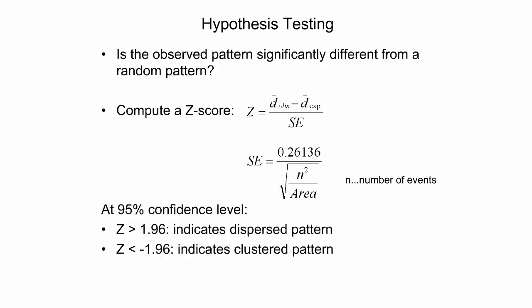A z-score is normally distributed with mean 0 and a standard deviation of 1. Therefore, at a confidence level of 95%, the obtained z-score value would have to be greater than 1.96 to indicate significant dispersion of the observed point pattern, and less than negative 1.96 to indicate significant clustering.